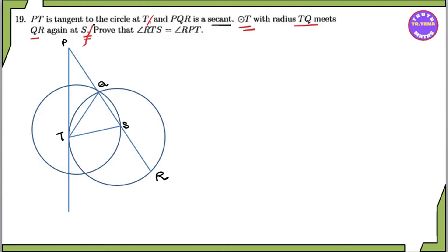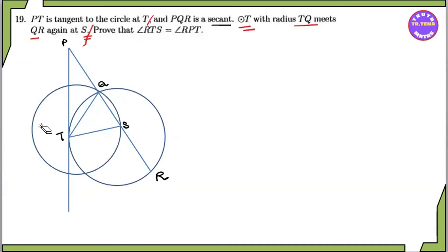If you look at the tangent line, you can see the second line in the circle. The second line is the circle T with radius TQ.